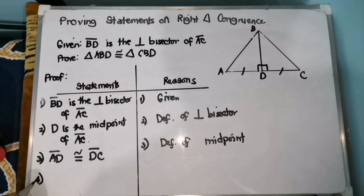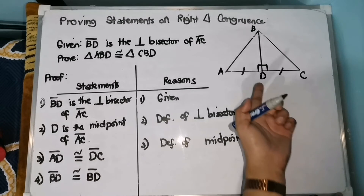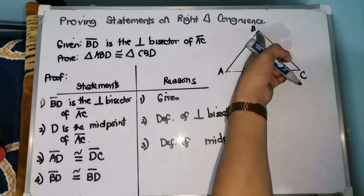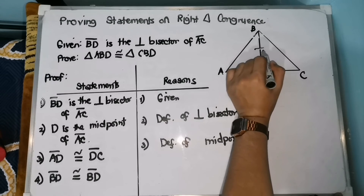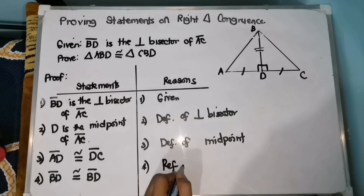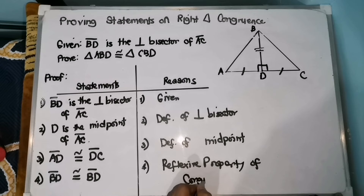For number 4, segment BD is congruent with segment BD. Kung mapapansin nyo, itong two triangles ay nagsishare ng common segment, which is BD — itong pinaka-center. So we can say that BD is congruent with segment BD, and our reason is the reflexive property.